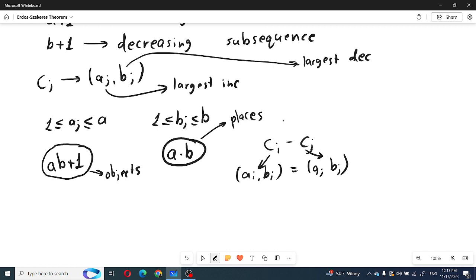So this means that a_i equals a_j and b_i equals b_j. Now let's look at why this is impossible.